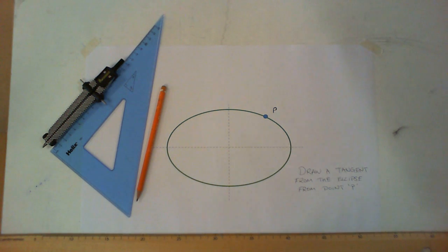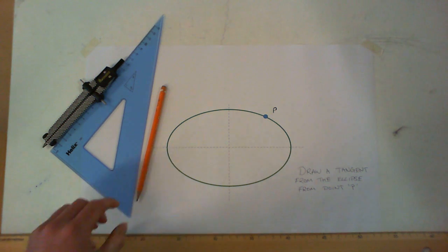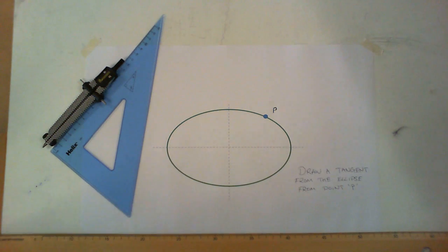Okay, so I'm just running through a quick question here—it's an ellipse question. Sometimes you can be asked to draw a tangent from the ellipse. Now there are two different types of ways this can come up. The point of contact where the tangent is going to touch the ellipse can be on the curve, such as in this question here, or it can be outside the curve.